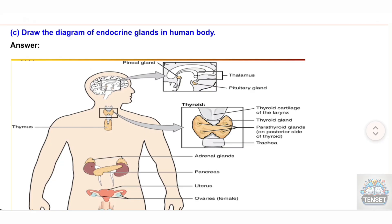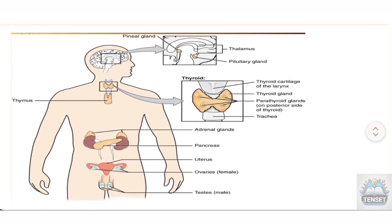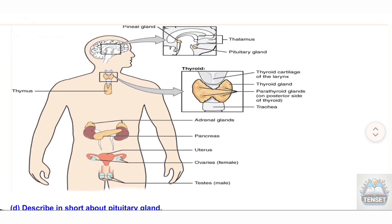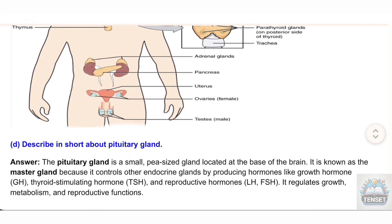C) Draw the diagram of endocrine glands in the human body. D) Describe in short about the pituitary gland. Answer: The pituitary gland is a small, pea-sized gland located at the base of the brain. It is known as the master gland because it controls other endocrine glands by producing hormones like Growth Hormone (GH) and Thyroid Stimulating Hormone (TSH).